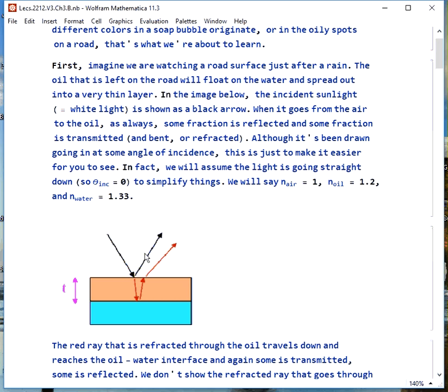One thing to keep in mind, it should be straight up and down for the analysis that we're doing and the only reason it's offset like this is because that makes it easier to see what's happening. In reality, the only change from doing this the way we're going to do it to doing it in this more general way where you have an angle of incidence that's not zero is the effective thickness of the layer changes.